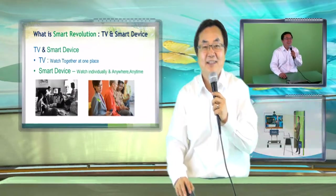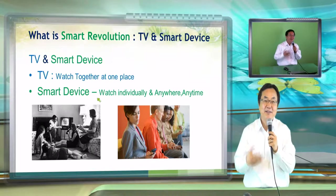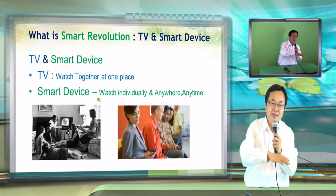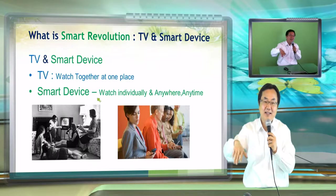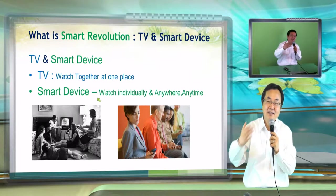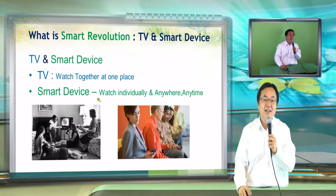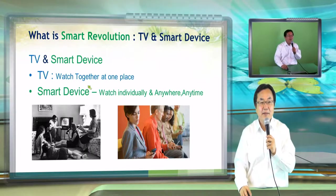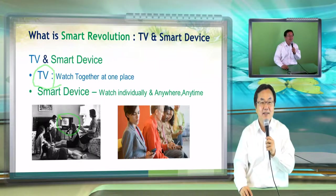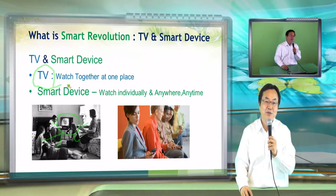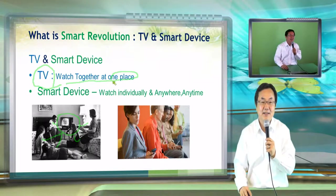I want to show one thing about the difference between the TV generation and the smart generation. The smart world has a slightly different philosophy than the TV era. The concept and philosophy of TV is that they have a broadcast station where they send the content out and all the family sits together watching TV. This is the TV generation — watch together at one place, where the broadcast station decides the content.